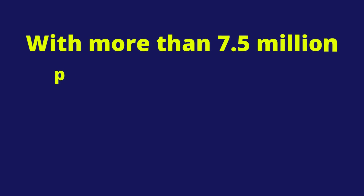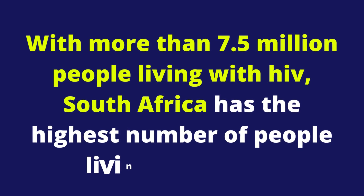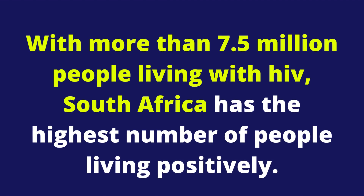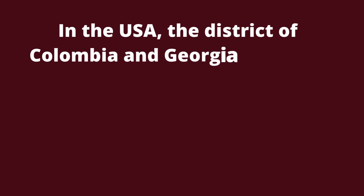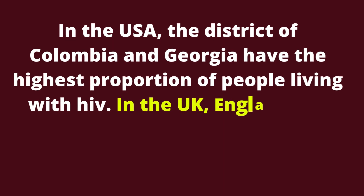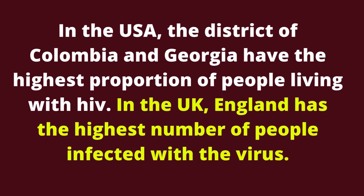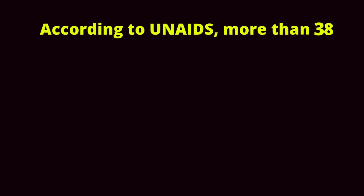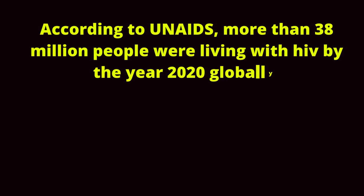What are the statistics on HIV and AIDS? With more than 7.5 million people living with HIV, South Africa has the highest number of people living positively. In the USA, the District of Columbia and Georgia have the highest proportion of people living with HIV. In the UK, England has the highest number of people infected with the virus. According to UNAIDS, more than 38 million people were living with HIV by the year 2020 globally.